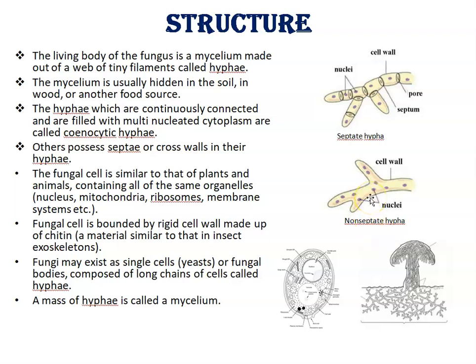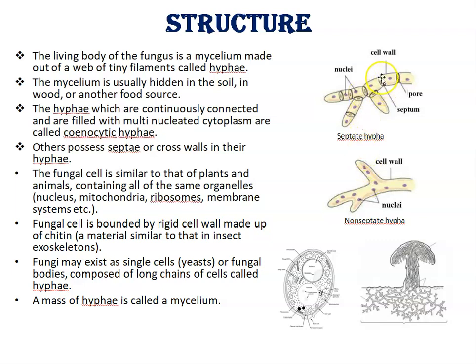Hyphae that are continuously connected and filled with multinucleated cytoplasm are called coenocytic hyphae. As you can see here, no septa are present. Septa means cross walls in between the nuclei. This type of hyphae, when no septum or cross wall is present, are called coenocytic hyphae. When septa are present, these are called septate hyphae.